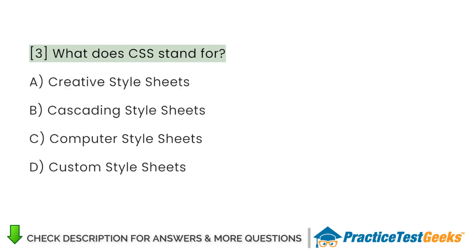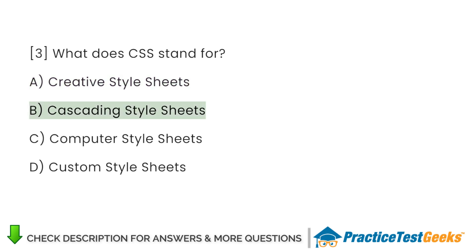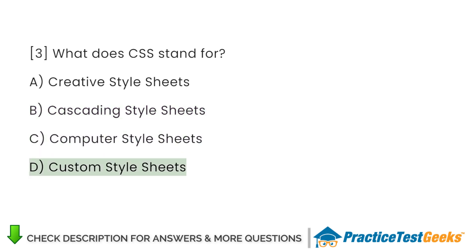What does CSS stand for? A. Creative Style Sheets. B. Cascading Style Sheets. C. Computer Style Sheets. D. Custom Style Sheets.